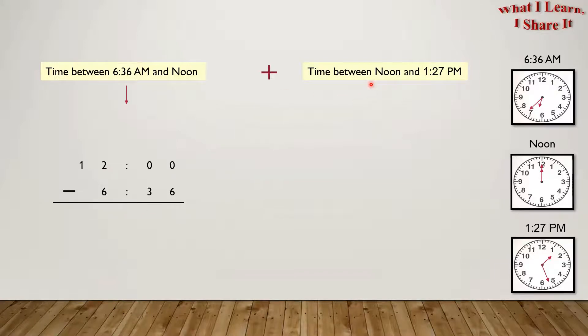So the time between noon and 1:27 p.m. is 1 hour and 27 minutes. This was pretty easy because noon is at 12 o'clock and it doesn't go to 13 o'clock. So what I did is from 12 o'clock, I added 1 hour, which would be 1 o'clock, and then 27 minutes, which would be 1 hour and 27 minutes.